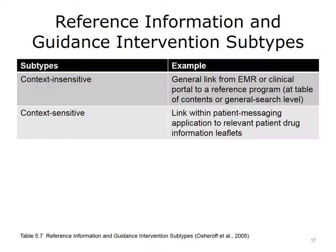Addressing recognized information needs of patients and clinicians is a benefit of the CDS intervention type: reference information and guidance. Subtypes and examples in Table 5.7 include context-insensitive guidance, such as a general link from the EMR to a reference program at table of contents or general search level, and context-sensitive guidance, such as a link within a patient messaging application to relevant patient drug information leaflets.